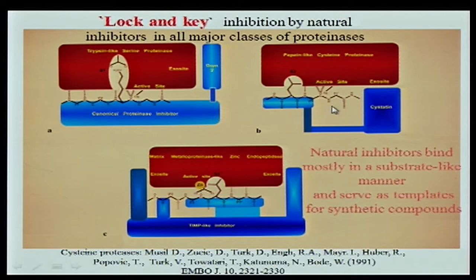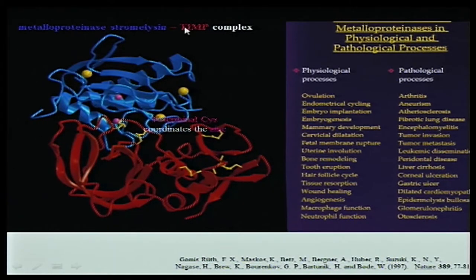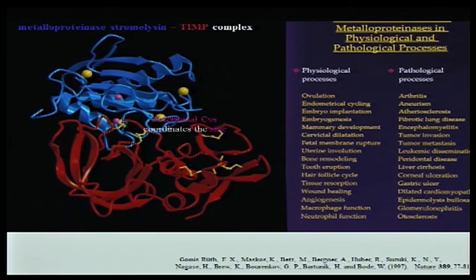This lock-and-key binding we found in all other major classes of proteinases. For trypsin-like proteinases, we discovered many more natural trypsin protease inhibitors — they all interact in the same way with a perfectly complementary surface. Then there are the cysteine proteases, such as papain, which are prototypical — they also have natural inhibitors and bind in a complementary, specific way. Then metalloproteinases: here is the active site zinc, the essential active site element. They embrace their target and bind very tightly.